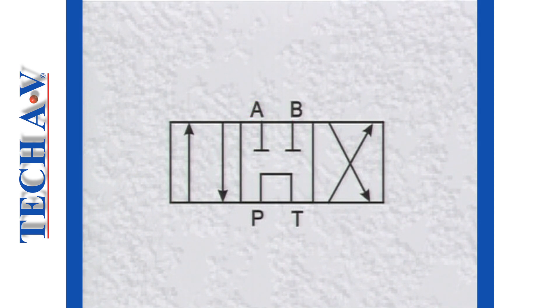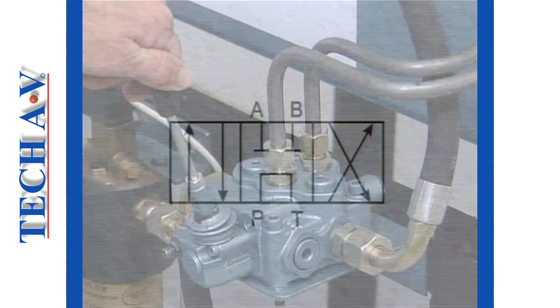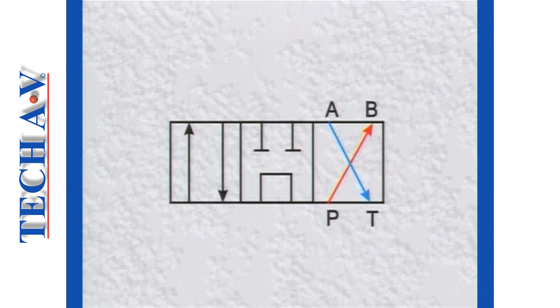Now we can associate the oil flow with the direction. In the extend position, oil flow will be in from the pump via port P and out to the actuator through port B. Return flow will be into the valve through port A and out to the tank via port T.